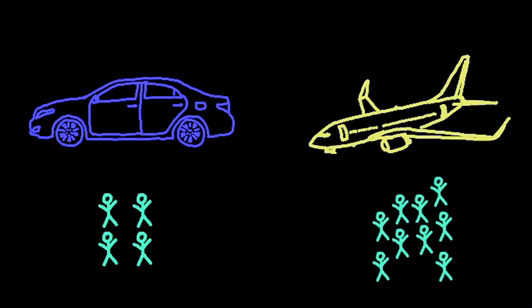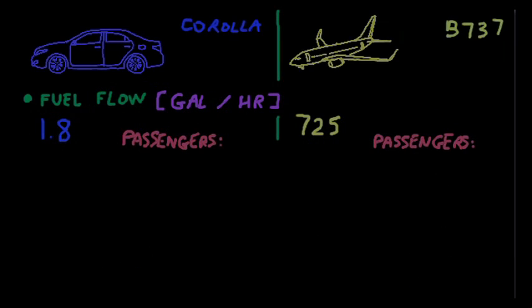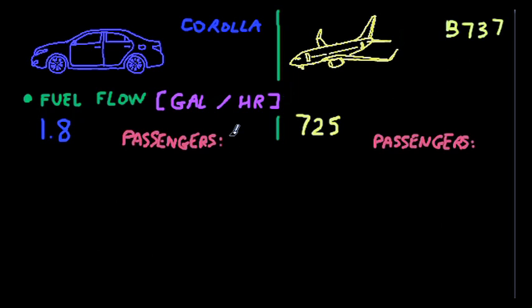So it looks like the plane burns a lot more fuel than the car. But this comparison is not really fair, since the plane also carries a lot more passengers. As a matter of fact, in the US, the average number of passengers in a car is only 1.6, whereas a Boeing 737 carries on average 144 passengers.